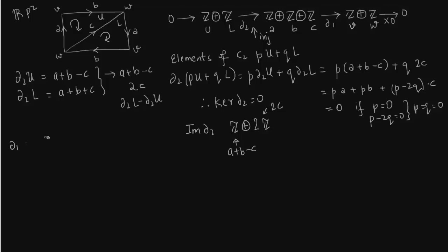Now we want to talk about map delta 1. Delta 1 of C is W minus W which is 0. Delta 1 of A is V minus W. Delta 1 of B is W minus V. These are both generated by the same generator, V minus W. The question arises what is the kernel of delta 1 and image of delta 1. Image we can see clearly is generated by V minus W, so Z is the image.